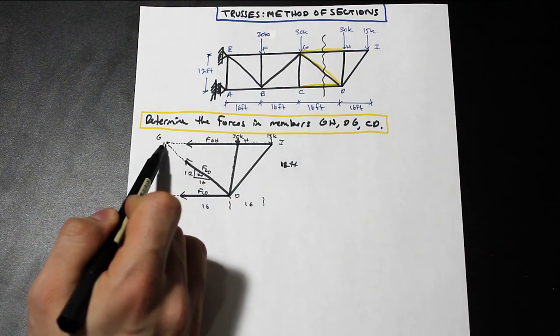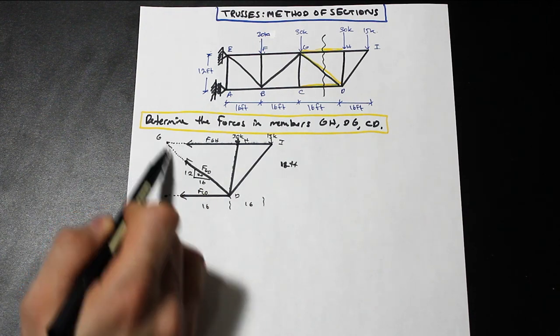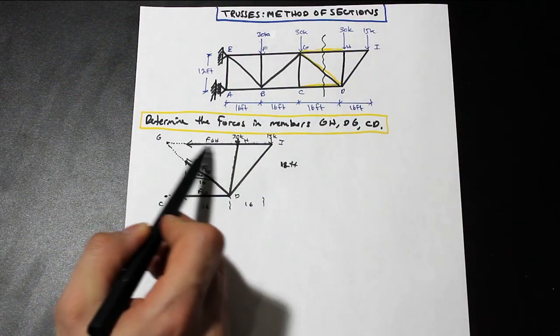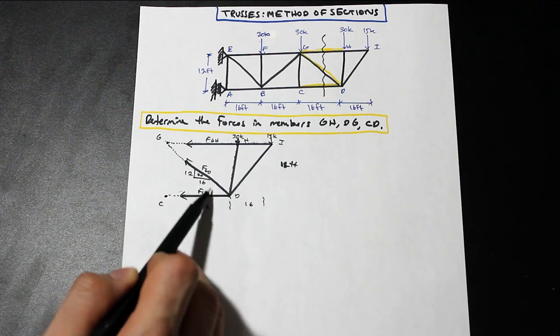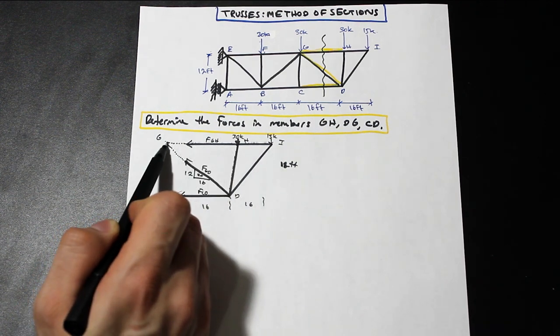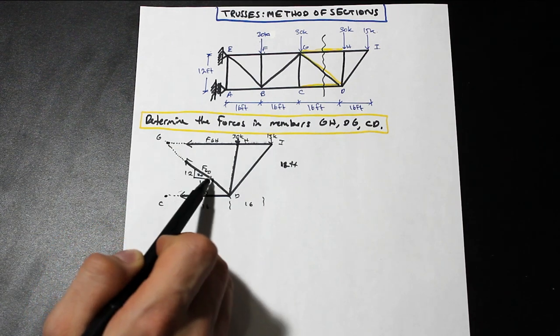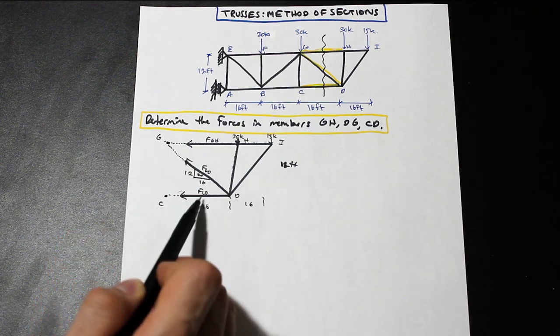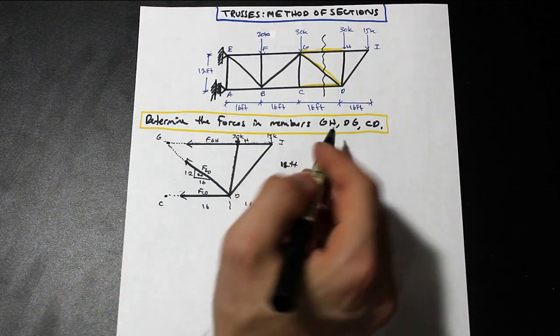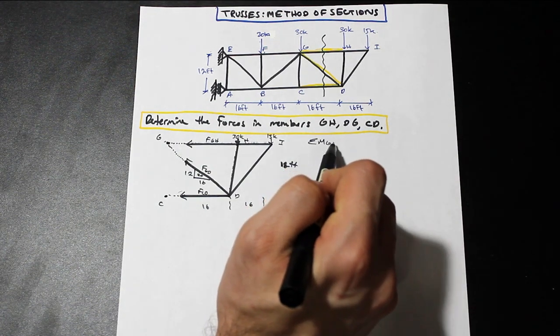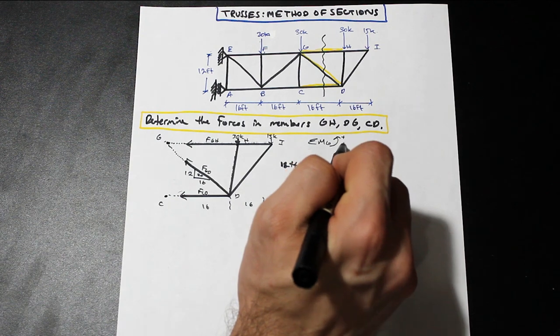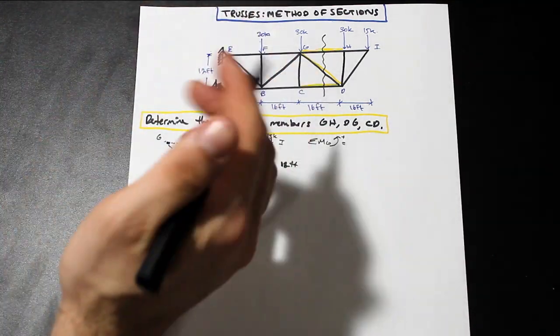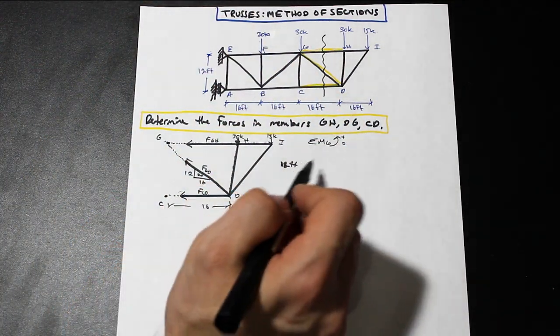So what I want to do is select a point, and I can select G, even though we don't have a member there, I can take the moment about G, I can take it about C, I can take it about anywhere I want on the page. I want to take a point that two members intersect so that I can isolate for the third unknown. So right now I'm taking a look at G. So I want to take the moment about G. And as I can see, my two unknowns go through G, so these will not have any moment when I take the moment about G, but FCD will. So let's start with that. So let's take the moment about G, and let's say that counterclockwise is positive. Sign convention is really important here, guys. Whatever you assume, just stick with it, because I know the directions can be confusing and stuff.